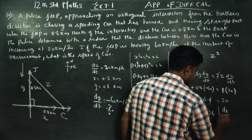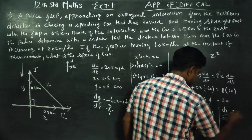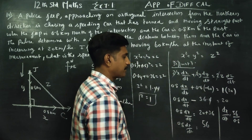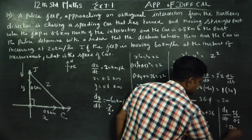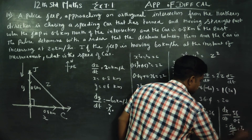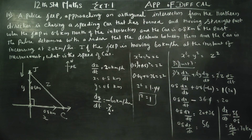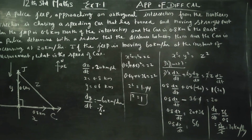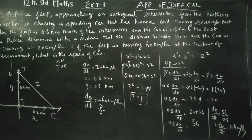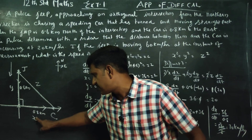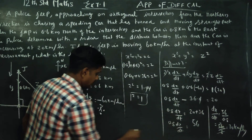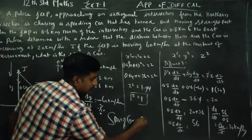Therefore dx/dt = 56 ÷ 0.8 = 560 ÷ 8. Since 8 × 7 = 56, we get dx/dt = 70 km per hour. The speed of the car is 70 km per hour.